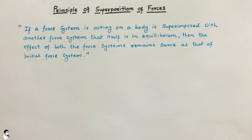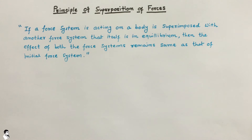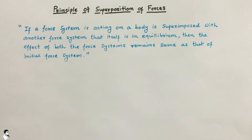To understand this, consider a body affected by forces P1, P2, and P3 that together produce a deformation delta. If we apply forces P1, P2, and P3 one by one and measure deflections delta 1, delta 2, and delta 3, then by superposition the overall delta equals delta 1 plus delta 2 plus delta 3 — the same as with the combined force system.